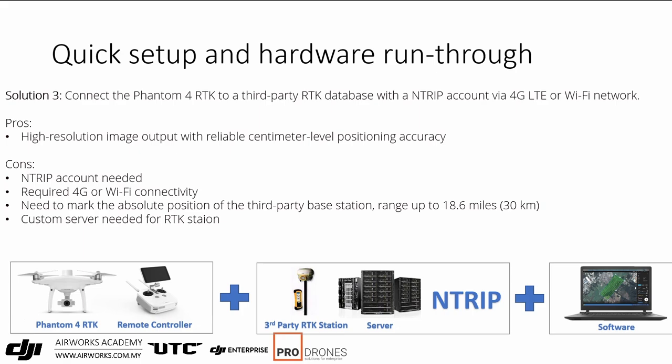The third option is to connect the Phantom 4 RTK and remote to a third-party base station, also via 4G network. You'd place it on a known point and use some kind of server network to broadcast the correction data, then link the remote to this system. You need 4G or Wi-Fi, possibly an Ntrip account, accurate placement on a known point, and a custom setup — not feasible for everyone.